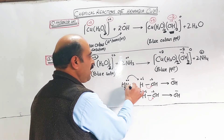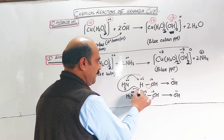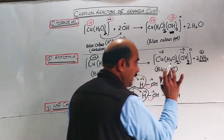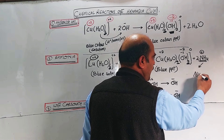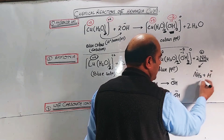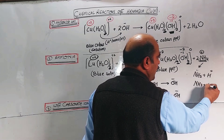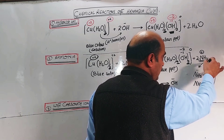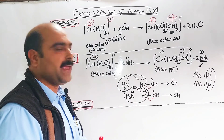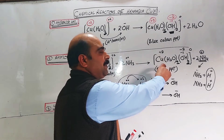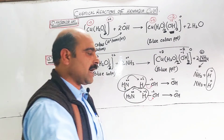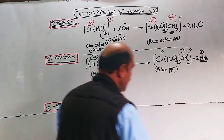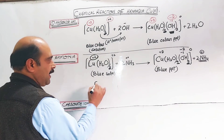Next, ammonia reacts with the hydrogen ion to form ammonium ions — two moles of ammonium ions are produced. This ammonium ion contains ammonia plus a hydrogen ion. These hydrogen ions provided in the solution make the solution acidic. The precipitate can be dissolved again in excess ammonia — this precipitate is soluble in excess ammonia.